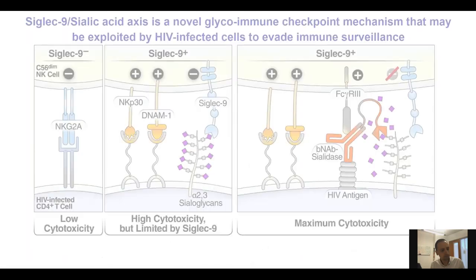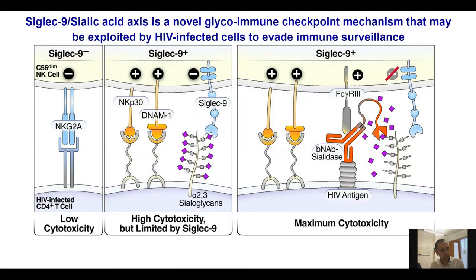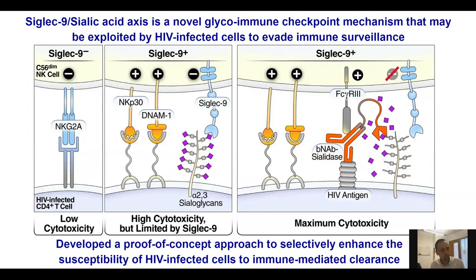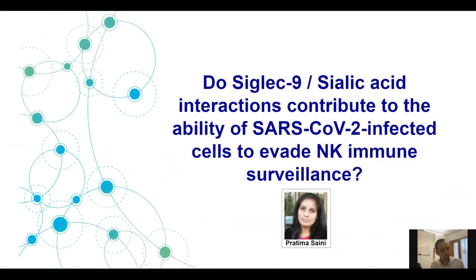To summarize this part: studying glycobiology allowed us to identify a novel glycoimmune checkpoint mechanism potentially exploited by HIV-infected cells to evade immune surveillance, and this information allowed us to develop a proof-of-concept approach to selectively enhance the susceptibility of HIV-infected cells to immune-mediated clearance using sialidase–HIV-specific antibody conjugates, which we are now advancing to animal studies. This leads to the second part of my presentation: is this specific to HIV, or could sialic acid–Siglec interactions also contribute to immune evasion by other virally infected cells — specifically SARS-CoV-2-infected cells? This work is from Britt Massini, another postdoc in our lab.